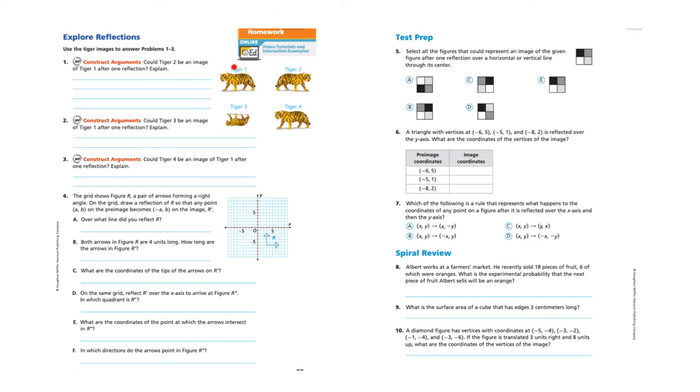This homework is simply more practice. It's optional. If you want to do some more problems, go ahead and do those. This next page, the test prep and spiral review. I recommend definitely doing this spiral review, but the test prep is also helpful just to give you practice with different types of questions that might be on standardized testing that relate to this topic of reflection. Once you're finished with everything, go back to the I CAN statement and see if you can do what it says to do.